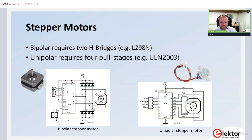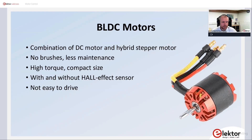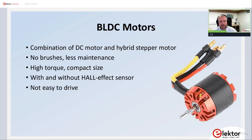That's basically stepper motors covered. The next thing — and this is more interesting and more complicated — is the brushless DC motor. A brushless DC motor is a combination of a DC motor and a hybrid stepper motor. They have no brushes, so the rotor is not electrically connected to any wires — it uses permanent magnets — so less maintenance is needed. They offer high torque in a really compact size. They are available with and without hall effect sensors. The hall effect sensor in this motor is used to determine the position of the rotor, and as mentioned they are not easy to drive.